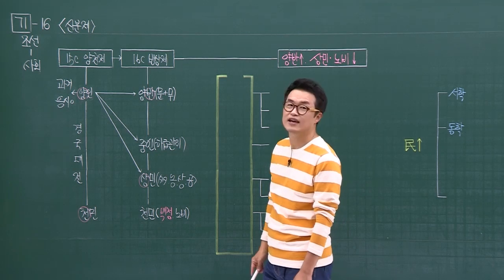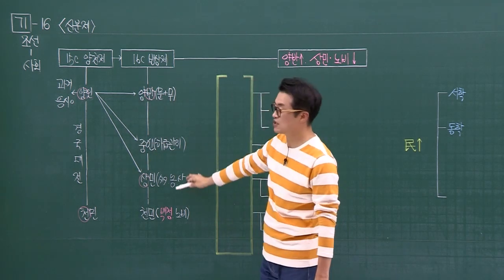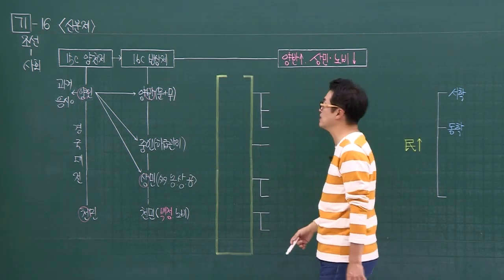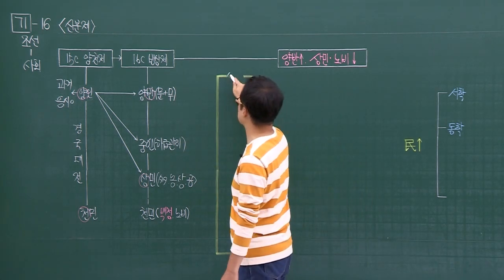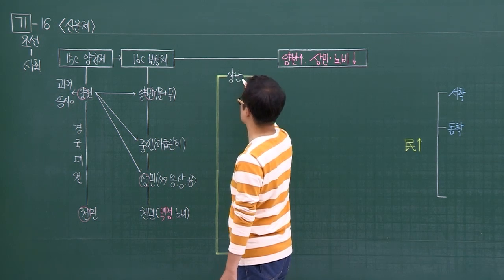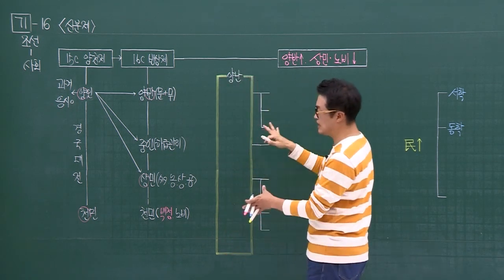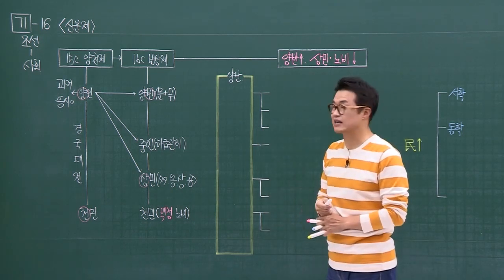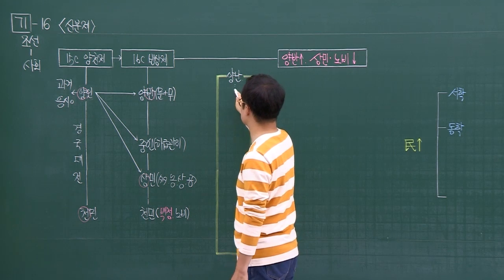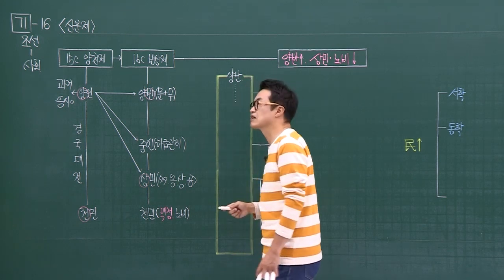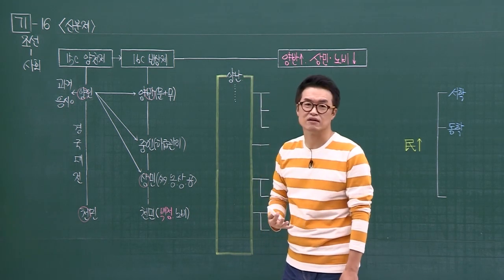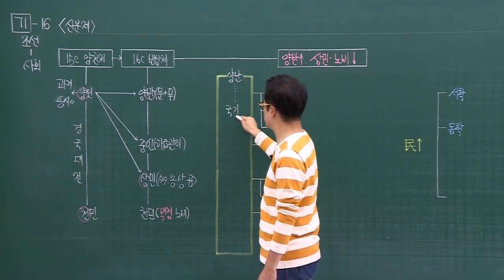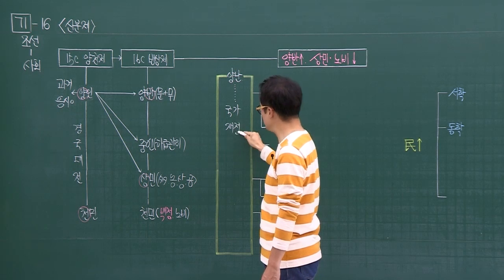그런데 이 양반, 중인, 상민, 천민이라는 신분제도가 와르르 무너지는 계기가 뭐였냐면 바로 양란입니다. 임진왜란, 병자호란, 양란을 겪으면서 이 시스템 자체가 무너지는 모습을 보이게 돼요. 전쟁이었으니까 국가 재정이 너무 안 좋았던 거예요.